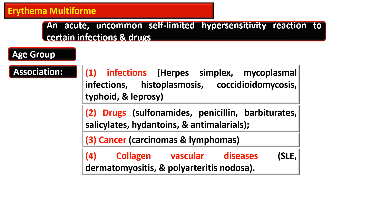Sulfonamide, penicillin, barbiturates, salicylates, hydantoins, and antimalarials are also associated with erythema multiforme. Carcinomas and lymphomas are also associated, as are collagen vascular disorders such as systemic lupus erythematosus, dermatomyositis, and polyarteritis nodosa.